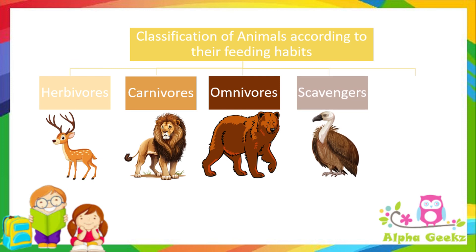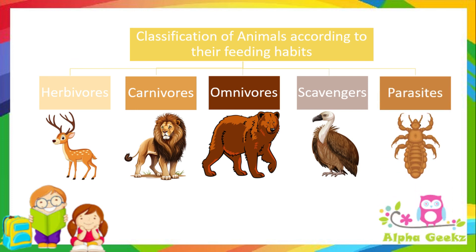Scavengers are animals or birds which eat the flesh of dead animals. And parasites are animals that depend on other hosts for their food.